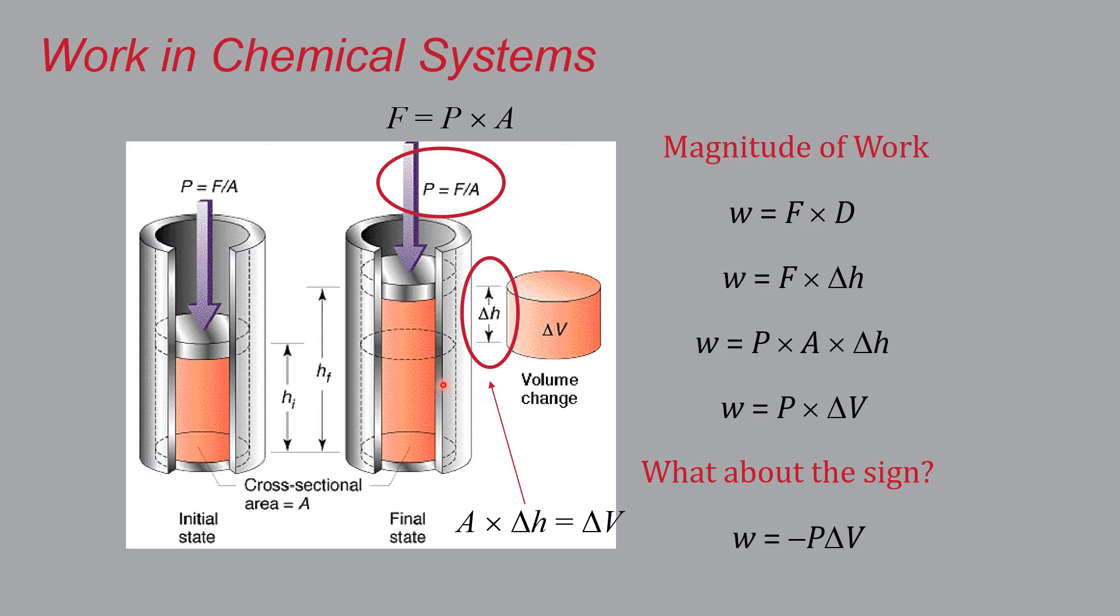So the work involved in expansion against a constant pressure, which is the way that one normally harnesses a chemical system for mechanical work, is simply the product of negative pressure times the change in volume. So this is how chemical systems transfer energy by virtue of mechanical work, or an example of one way to do it. They're all pretty much like this.